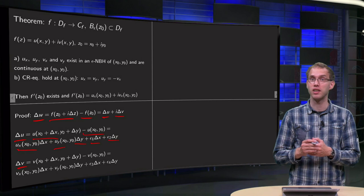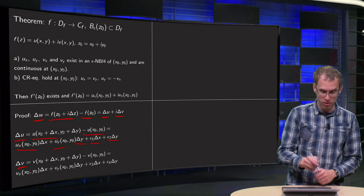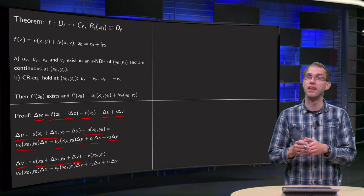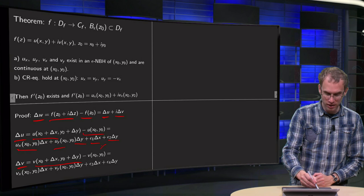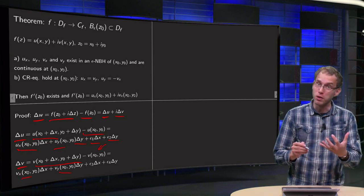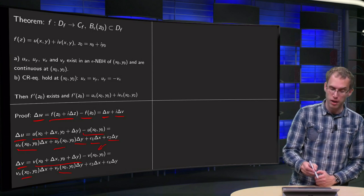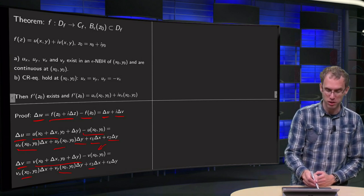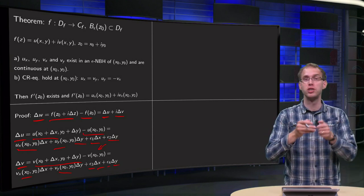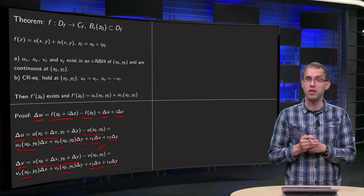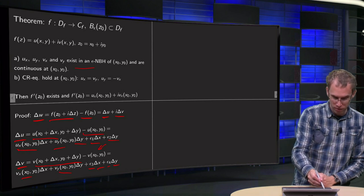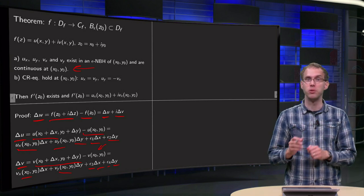You do something similar for Δv: you make the same Taylor expansion, so v(x0 + Δx, y0 + Δy) equals v(x0, y0) plus vx times Δx plus vy times Δy, plus a remainder ε3·Δx + ε4·Δy, where both epsilons go to 0 as Δx and Δy approach 0.